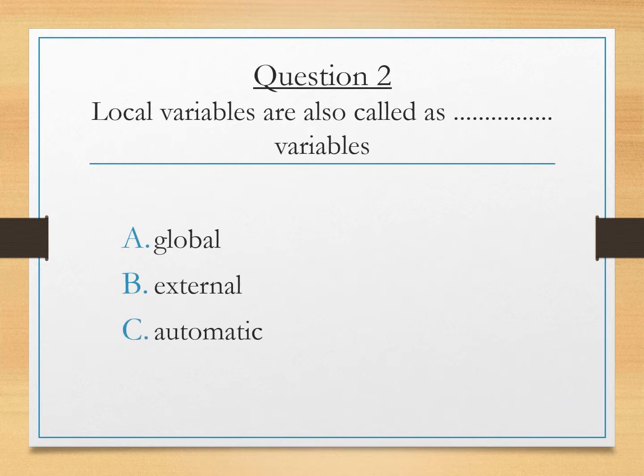Question 2. Local variables are also called as local have their scope limited to their function or program. So they are known as automatic variables. Answer is C. Automatic variables.